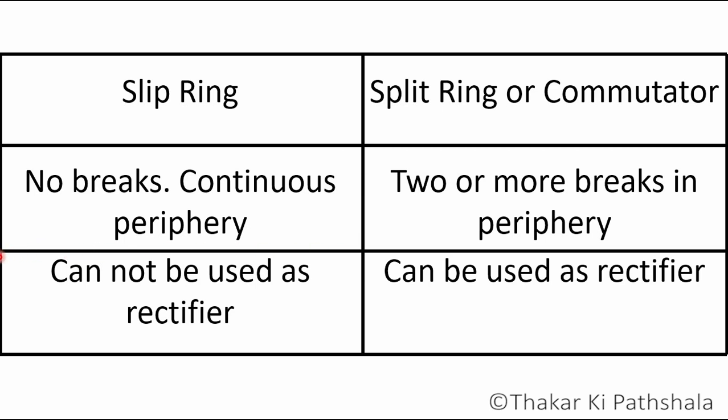The purpose of a slip ring is the same as a commutator. The difference is that it can only transfer power between rotating and static mechanisms, but cannot convert it from AC to DC or DC to AC.